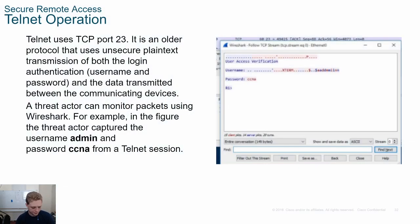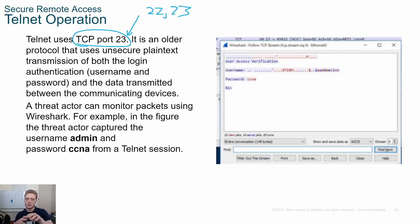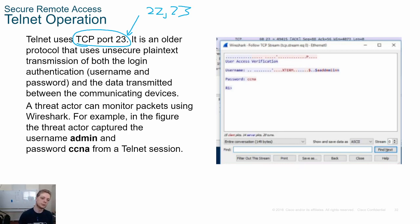Telnet uses TCP port 23. The way I remember it is Telnet and SSH are 23 and 22 respectively. It's a bit weird because Telnet is the older protocol but uses the higher port number. So SSH is 22, Telnet is 23, and they both use TCP — that's easy to remember.